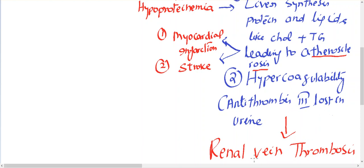Okay, so as a result they have renal vein thrombosis. So two most important complications in a patient with nephrotic syndrome are myocardial infarction and stroke, and the other is renal vein thrombosis.